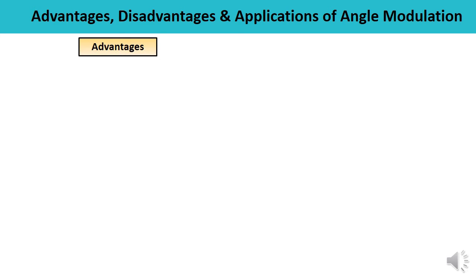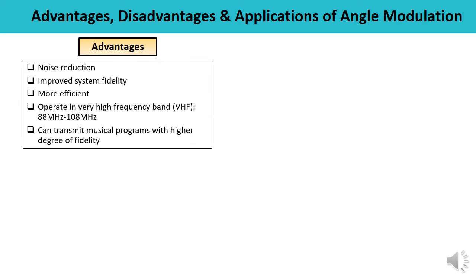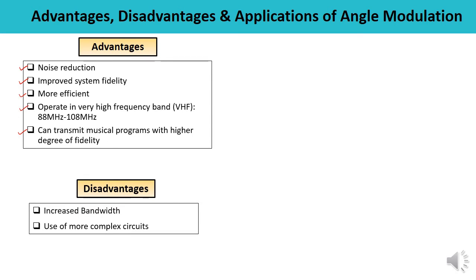Let us discuss the advantages, disadvantages, and applications of angle modulation. The advantages include noise reduction, improved system fidelity, and more efficient operation. Angle modulation operates in a very high frequency band, approximately 88 MHz to 108 MHz, and can transmit musical programs with a higher degree of fidelity. The disadvantages are that the circuits used are quite complex and bandwidth is also increased.